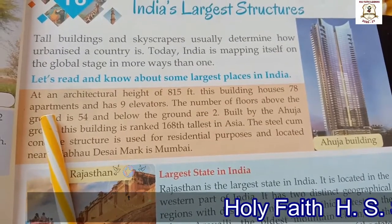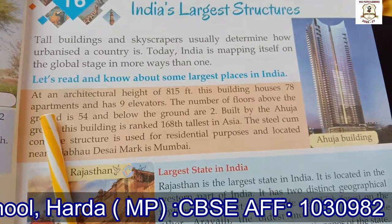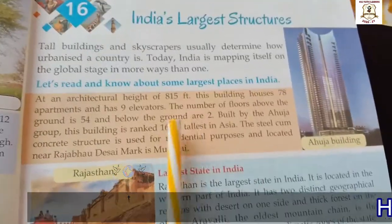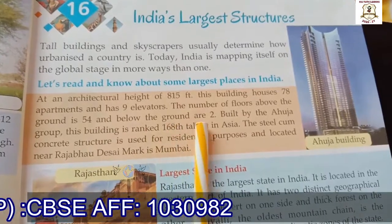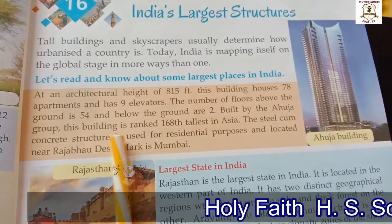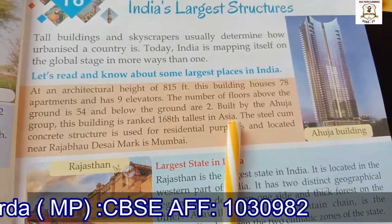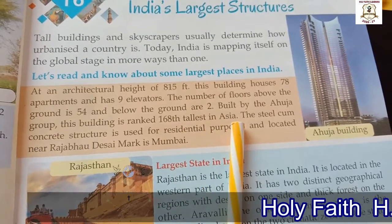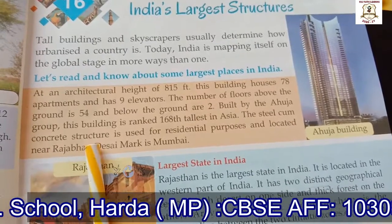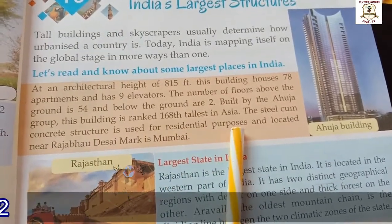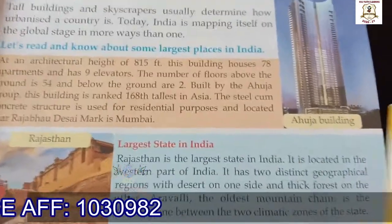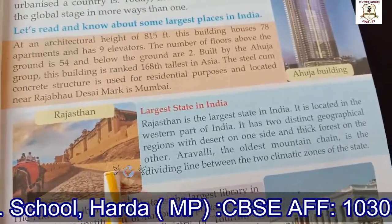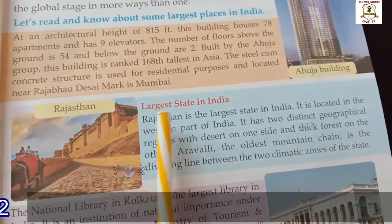Apartments means a set of rooms. The number of floors above the ground is 54, and below the ground are two. Built by the Ahuja Group, this building is ranked the 168th tallest building in Asia. The steel and concrete structure is used for residential purposes and is located near Rajabhau Desai Marg in Mumbai. The name of this building is Ahuja Building.